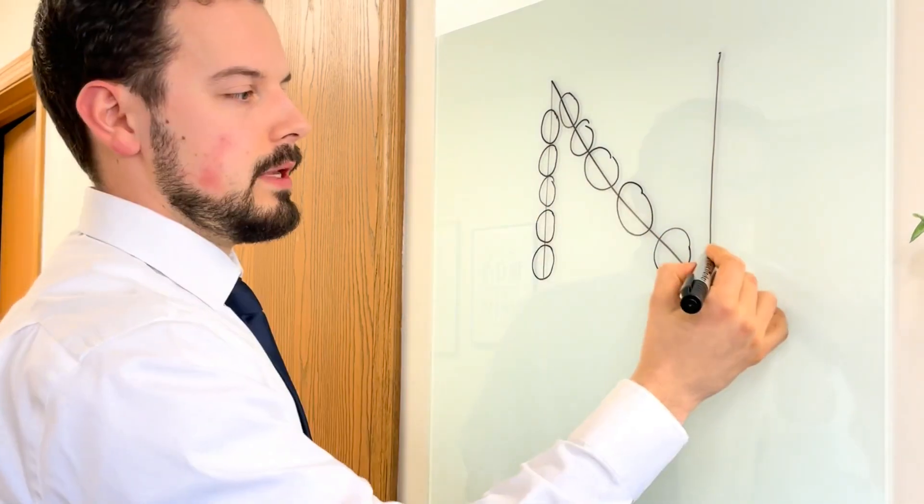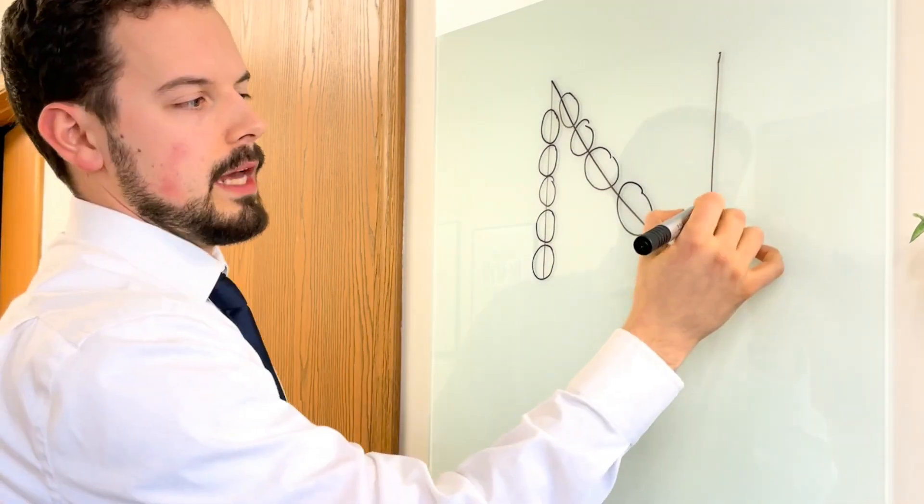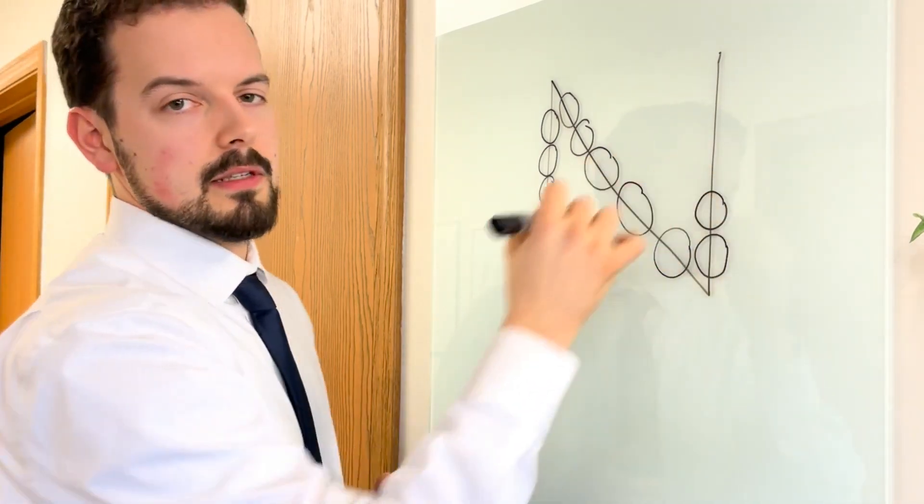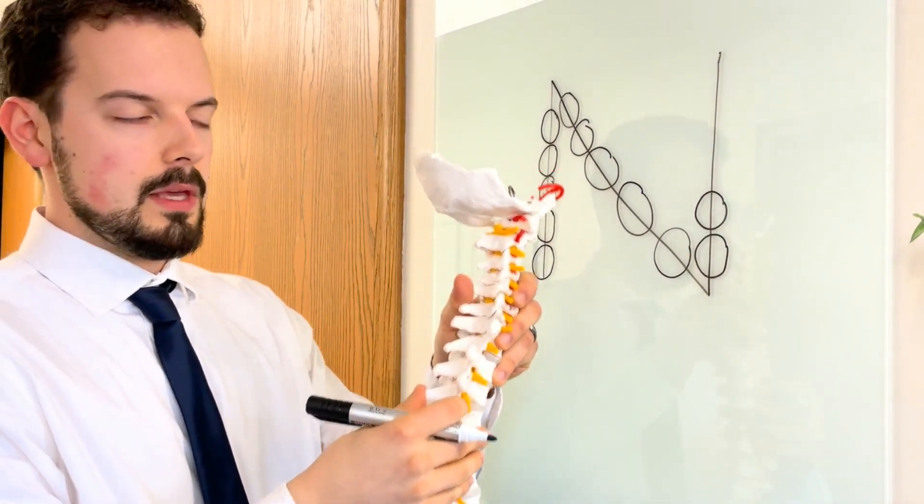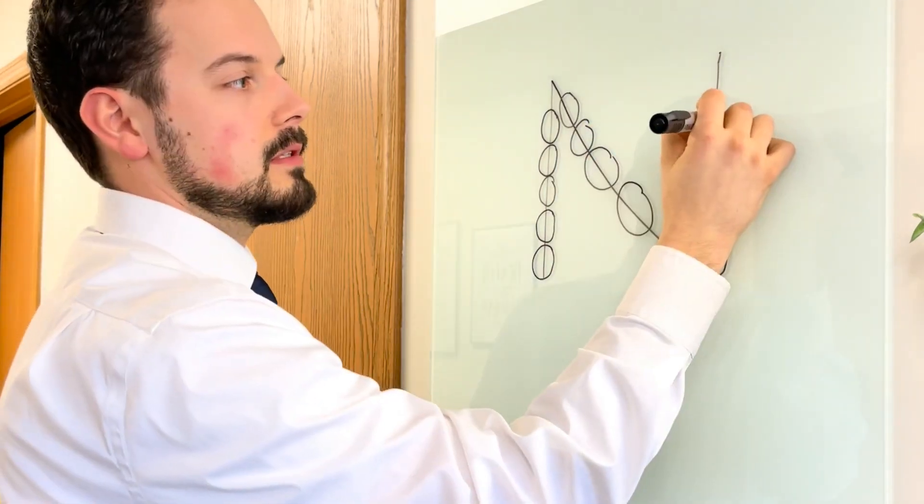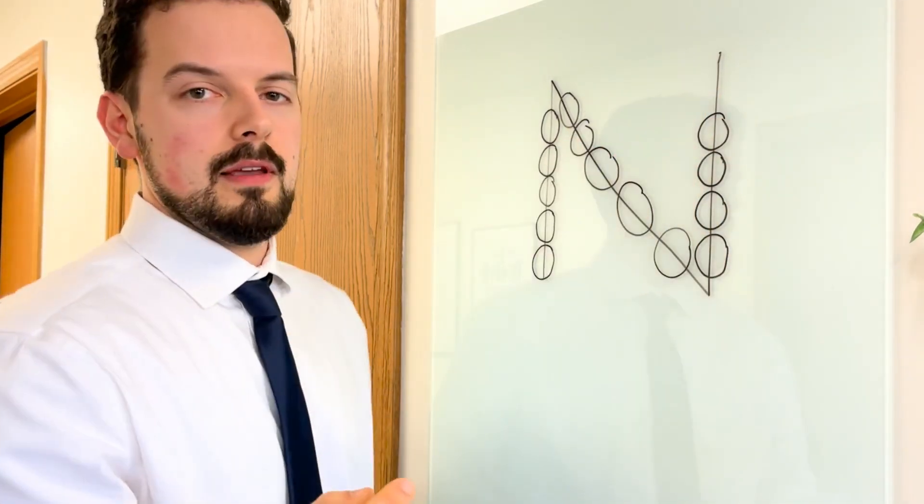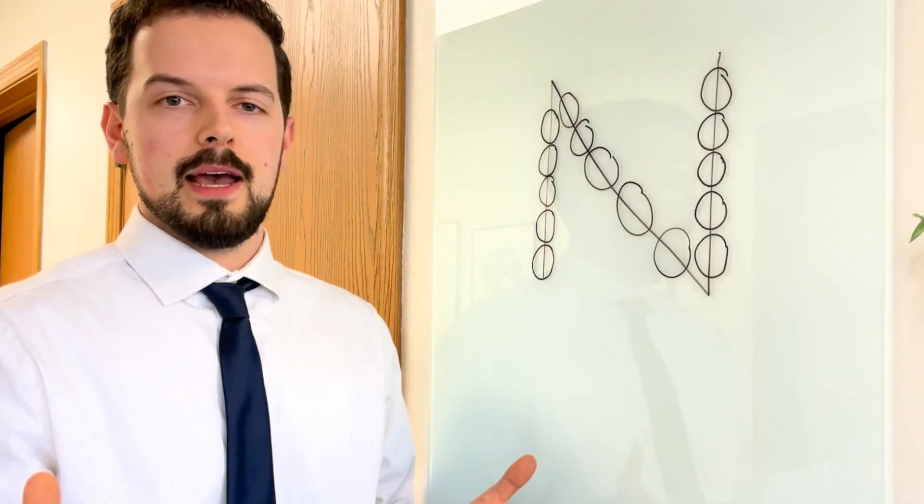What chiropractors do? We adjust the bones of the spine and the bones of the extremities as well. What that does is take pressure off of the nervous system, take pressure off of these nerves by putting the bone exactly where it needs to be, which increases the function of the organs, cells, and tissues, which then determines the function of the body chemistry, which allows us to have the best optimal health we can possibly have.